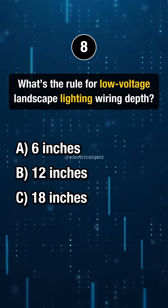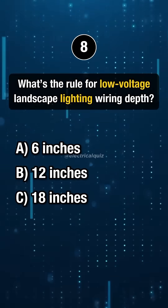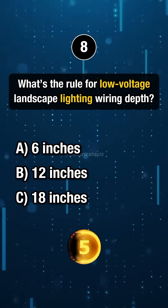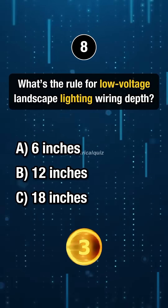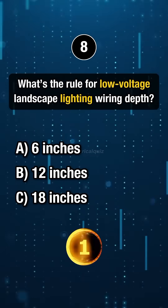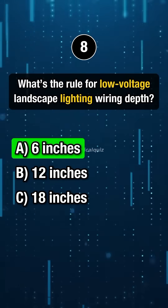Question 8. What's the rule for low-voltage landscape lighting wiring depth? Answer A: 6 inches.